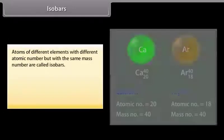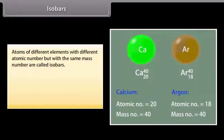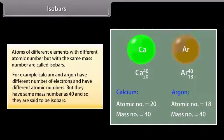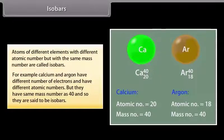Atoms of different elements with different atomic numbers but with the same mass number are called isobars. For example, calcium and argon have different numbers of electrons and different atomic numbers, but they have the same mass number of 40, and so they are said to be isobars.